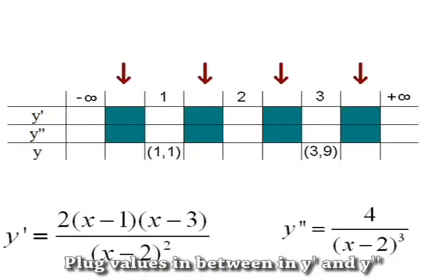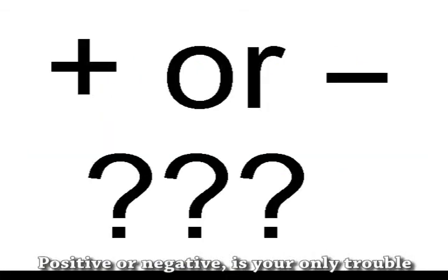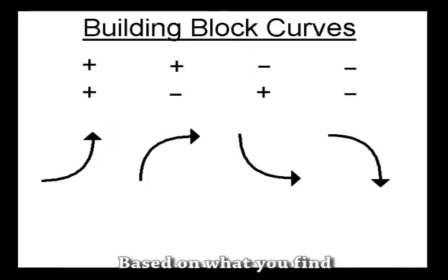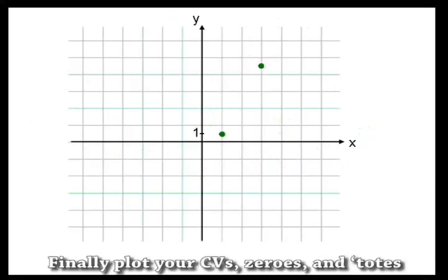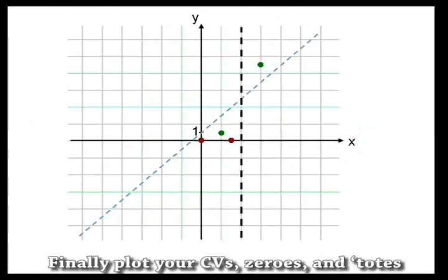Plug values in between y-prime and double, positive or negative is your only trouble. Based on what you find, draw your building block curves, the four possible ways of how a function serves. Finally plot your CVs, zeros and asymptotes.